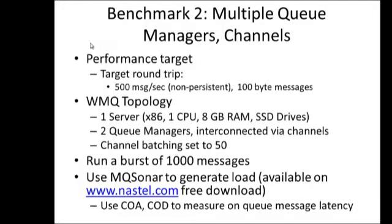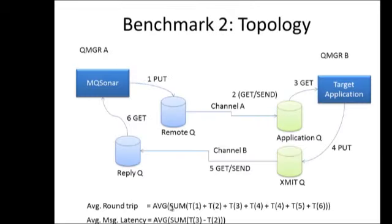Now let's go to our second test and compare it with the first. For benchmark number 2, we're going to use multiple queue managers — two queue managers with sender-receiver channels between each one, again on the same system. The channels are set to a batching of 50 messages per batch, and we'll run a burst of 1,000 messages. We'll use MQ Sonar with confirm-on-delivery and confirm-on-arrival — the same exact setup, but with two queue managers instead of one.